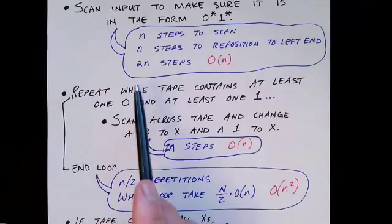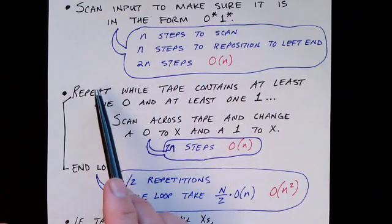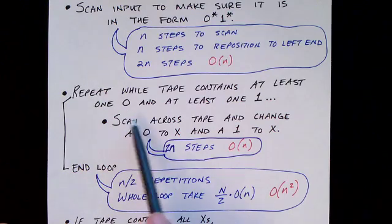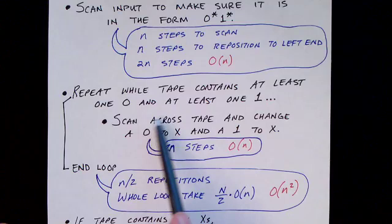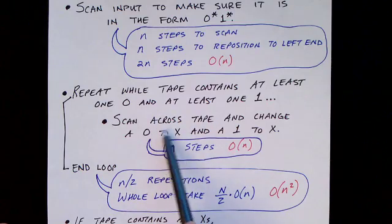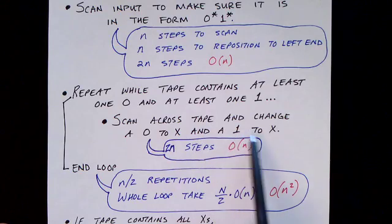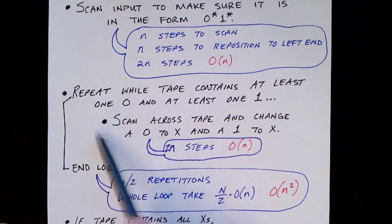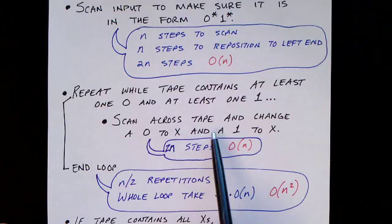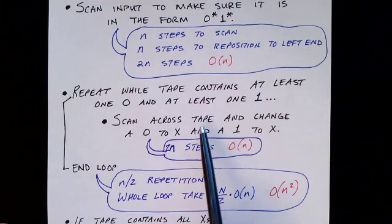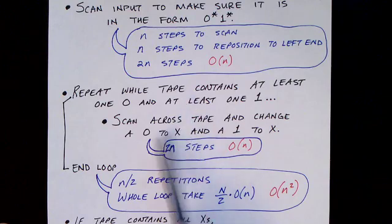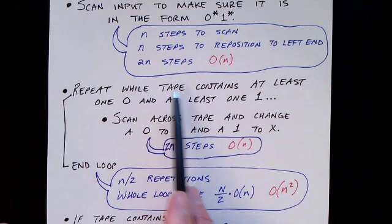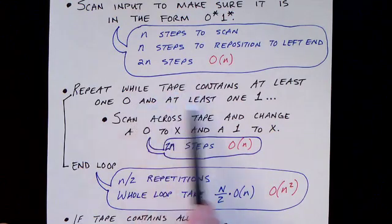Then we go back to the beginning of the tape and scan the tape in a loop. Each iteration of the loop will scan across the tape, changing the first zero encountered into an X and the first one encountered into an X, then return to the left end of the tape. This operation repeats while the tape contains at least one zero and at least one one.